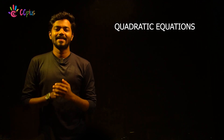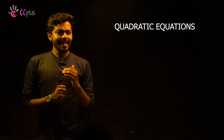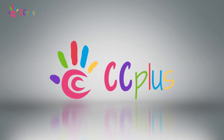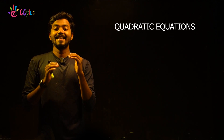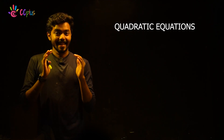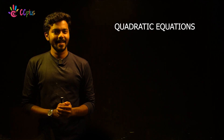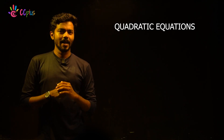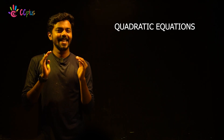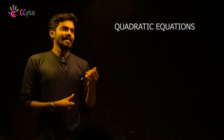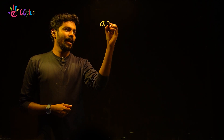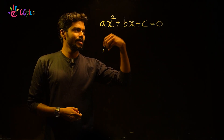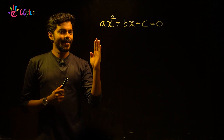Quadratic Equations are called Second-Degree Equations. The general form is Ax² plus Bx plus C is equal to 0. This is the Quadratic Equation, because the maximum degree is 2.